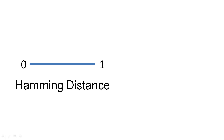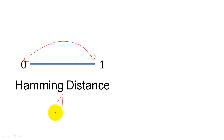Suppose that we want to send just one bit between two components. The Hamming distance between these code words is 1, as only one bit is different between these two code words. Since these two code words are the only words in the code, the distance of the code is also 1.